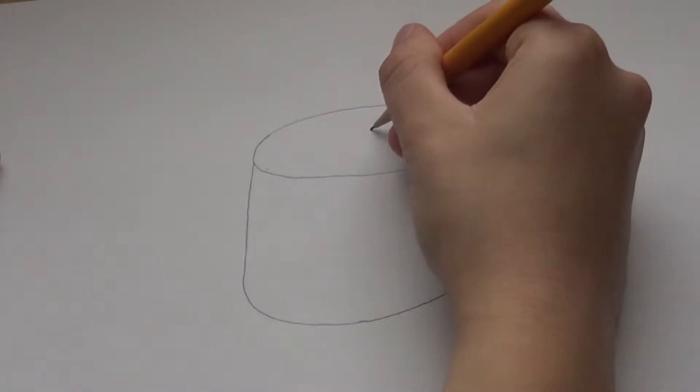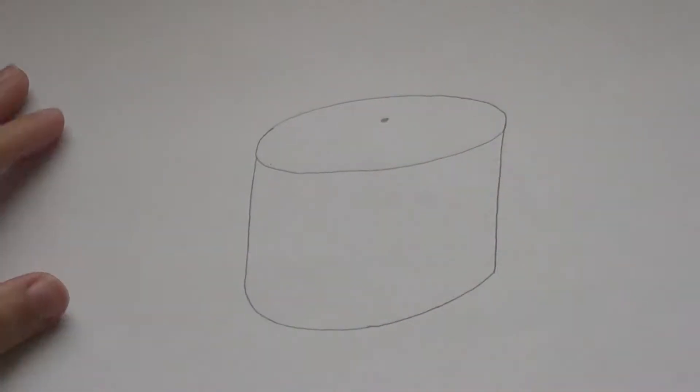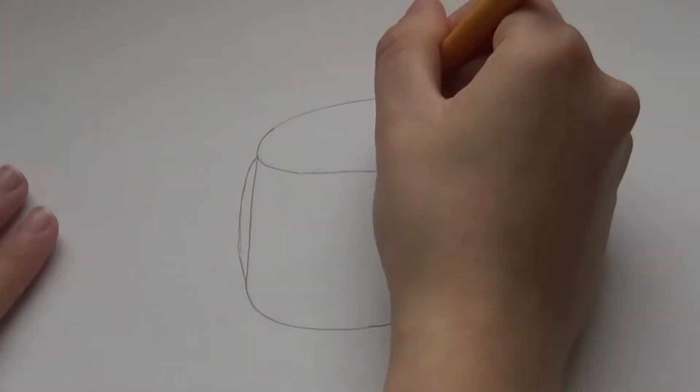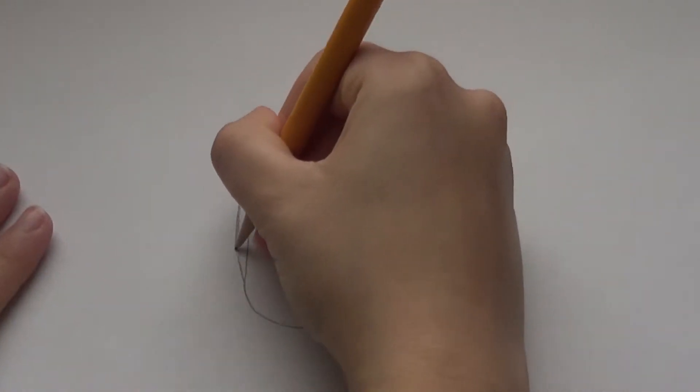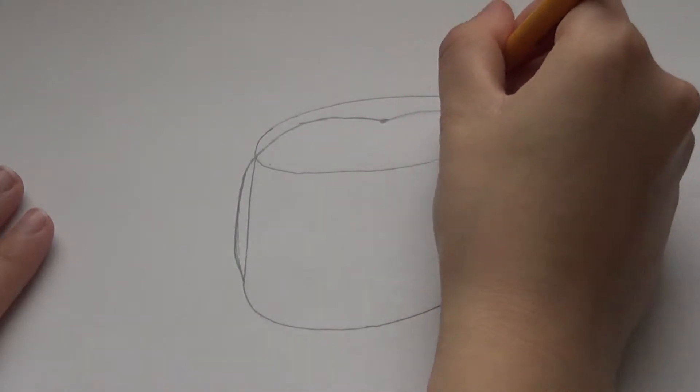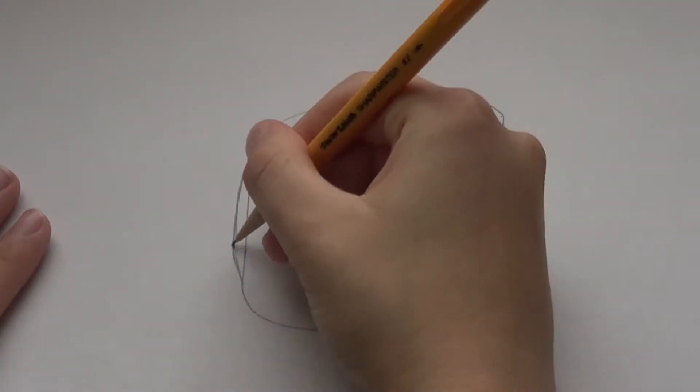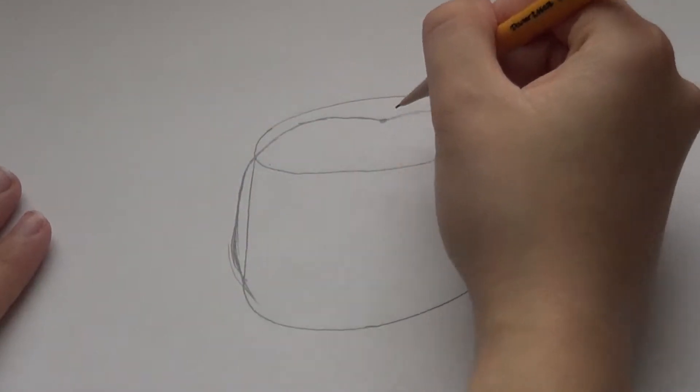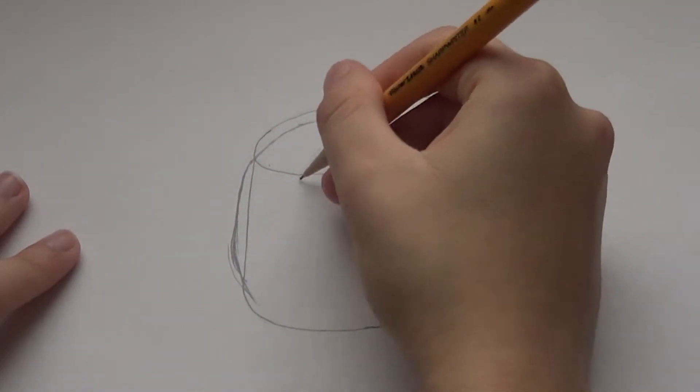Add a dot in the center of the top face of the cylinder. Then we're going to draw lines that go from that dot and extend around the cylinder and curve around. So you're going to imagine this is three-dimensional and you are moving your pencil around the shape.